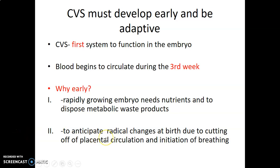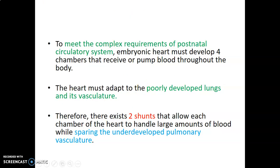Immediately after birth, the child starts breathing. The cardiovascular system has to start developing quite early so that by birth it is efficient enough, because you are going to cut off the placental circulation and initiate the pulmonary circulation. After birth, in the postnatal period, the lungs have developed. But in utero, the heart must adapt to the poorly developed lungs and its vasculature. Shunts allow blood to pump through the heart chambers and bypass the underdeveloped pulmonary vasculature.